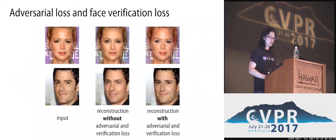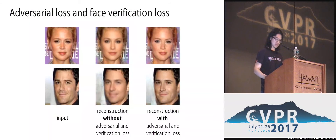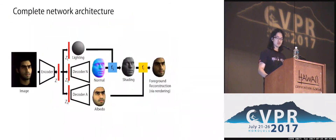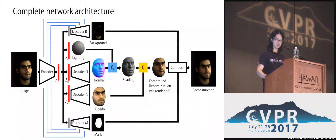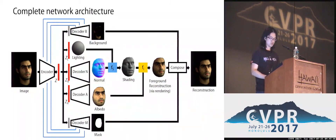With these two losses, the reconstructed faces look more realistic and the subject's identity is much better preserved. Since we only assume the face region follows the rendering procedure, we remove the background from the rendering-based reconstruction. To reconstruct the entire image, we add a decoder for the background, a decoder for a mask, and a compositing step to reconstruct the final image with the rendered face.